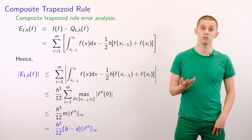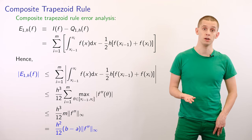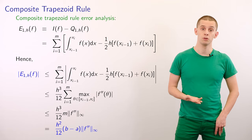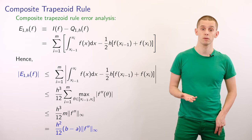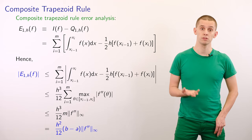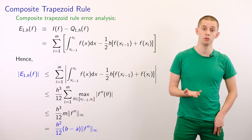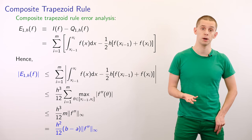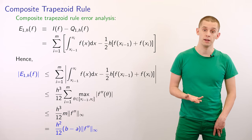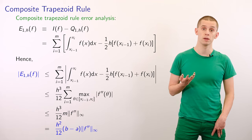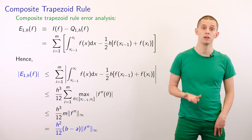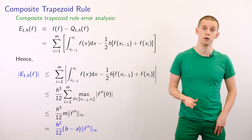We can bound those second derivative terms by the infinity norm of the second derivative over the entire interval, and we've also got m terms in that sum. Therefore our error bound is less than or equal to h cubed divided by 12 times m times the infinity norm of f double prime. Since m times h equals b minus a, we can write that as h squared divided by 12 times b minus a times the infinity norm of f double prime.